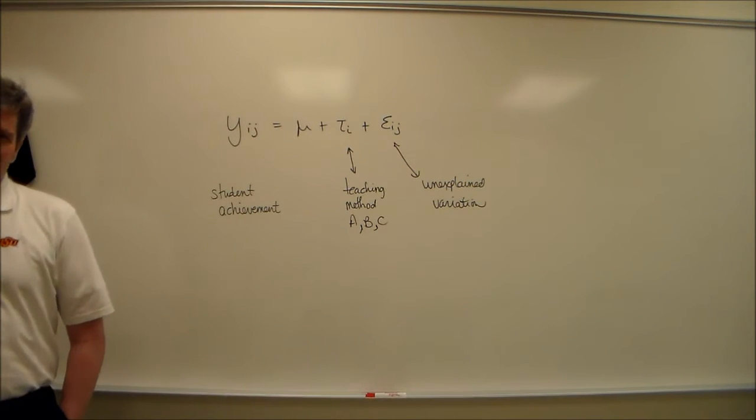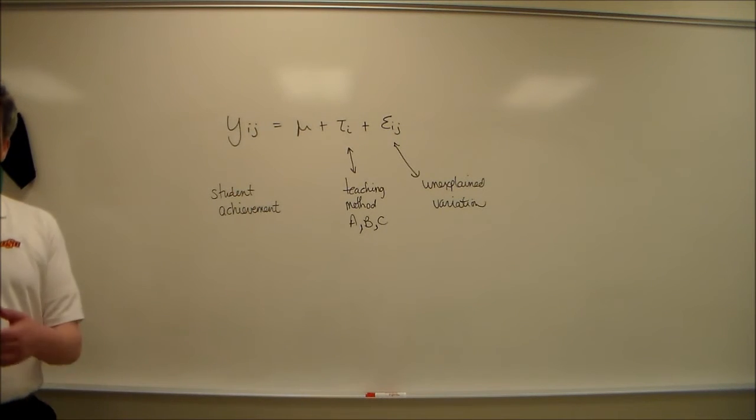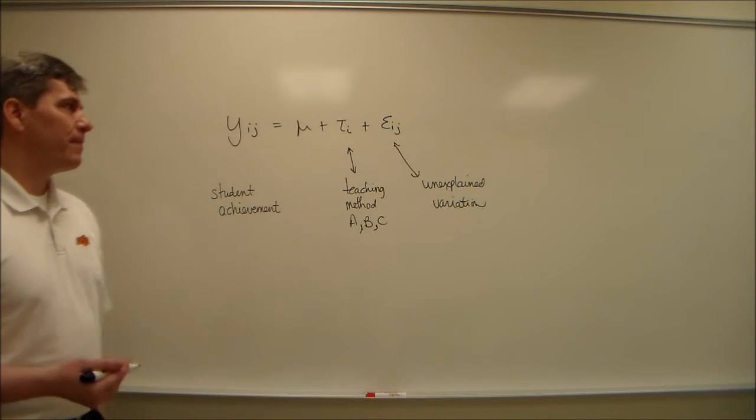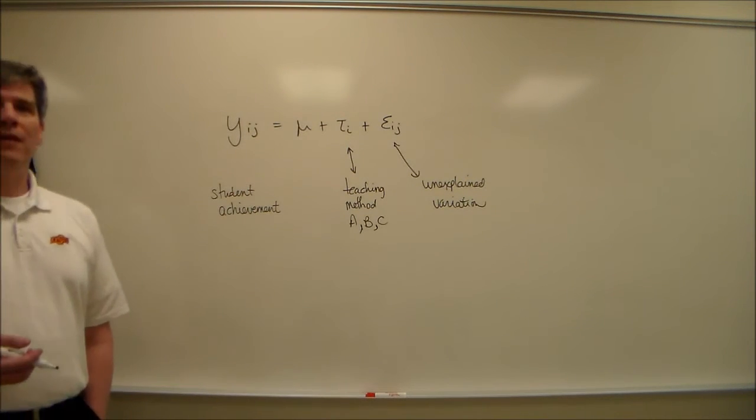Remember that's unexplained, not unexplainable. That unexplained variation is going to include variation that is explainable that we're not bothering to explain, plus unexplainable variation. So it's going to be both the explainable and the unexplainable. What they have in common is we're not bothering to measure them. So this is a very typical one-way fixed effect.